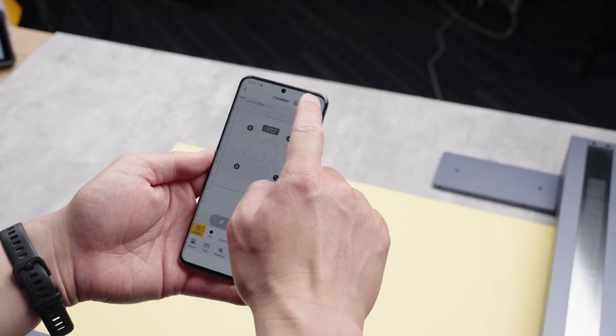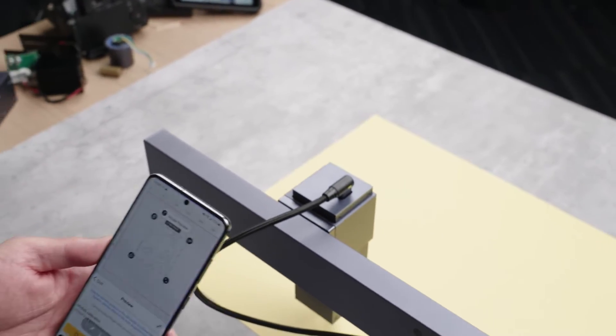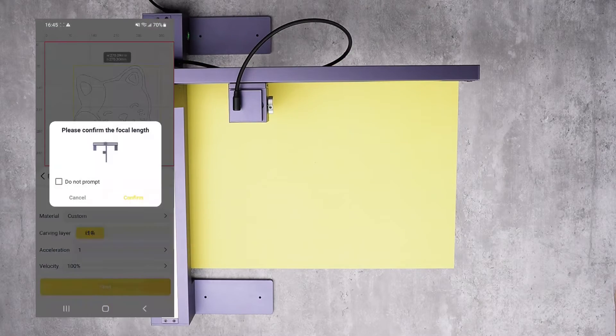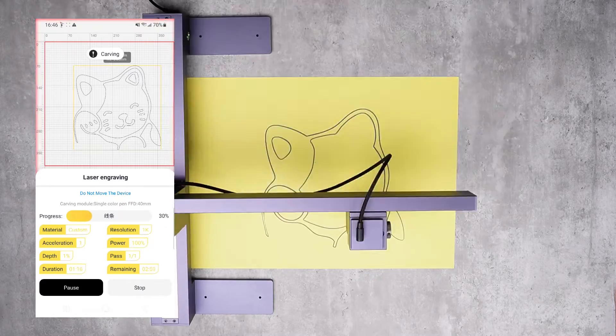Once that's done, fire up the app and select the picture you want to draw. Preview it to make sure everything looks good, then send it over to the machine and watch it go to work.